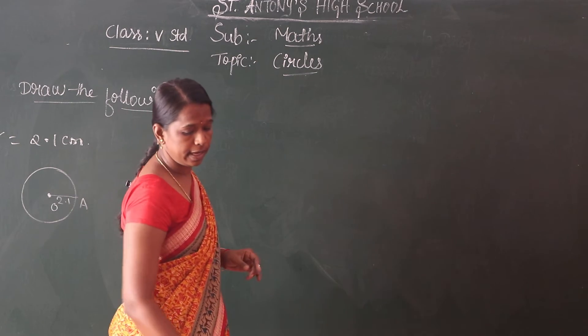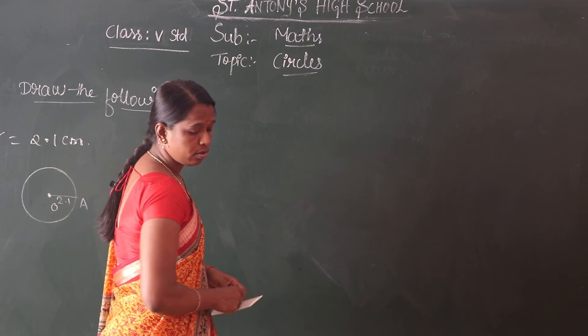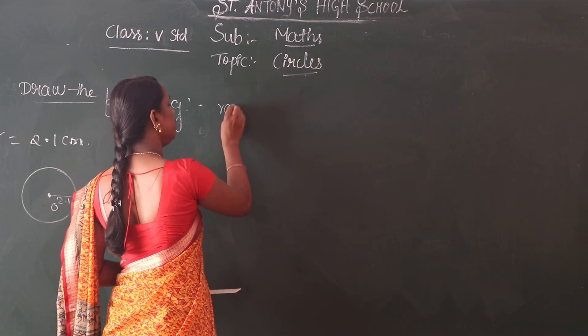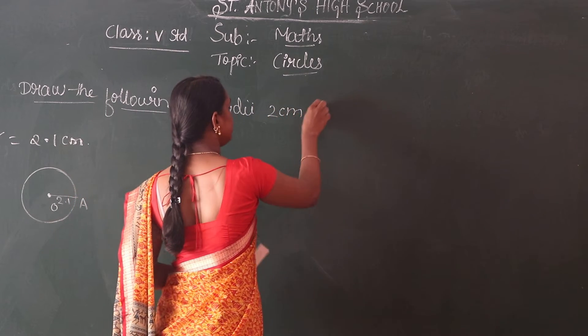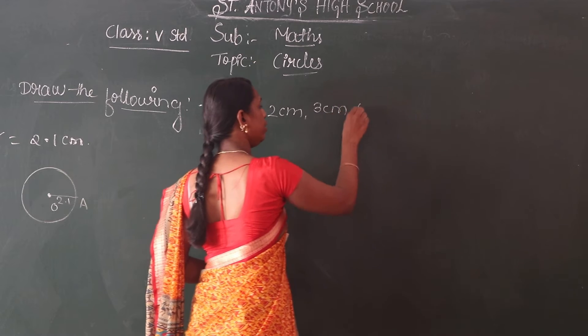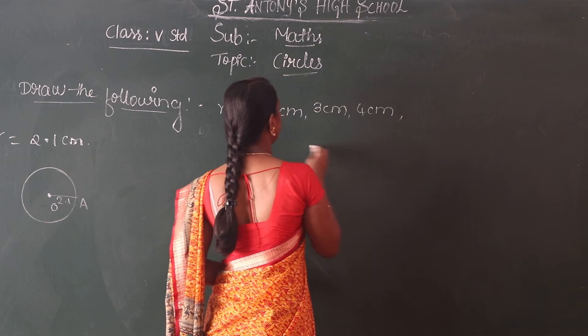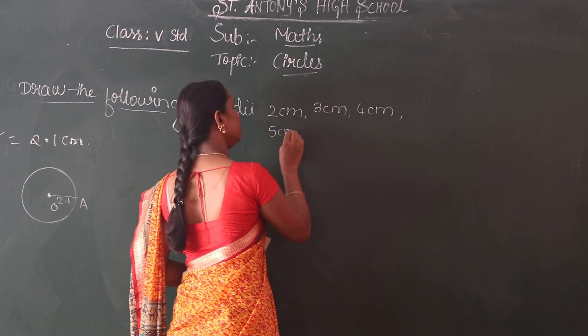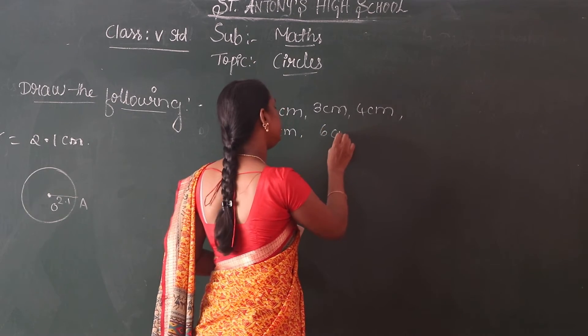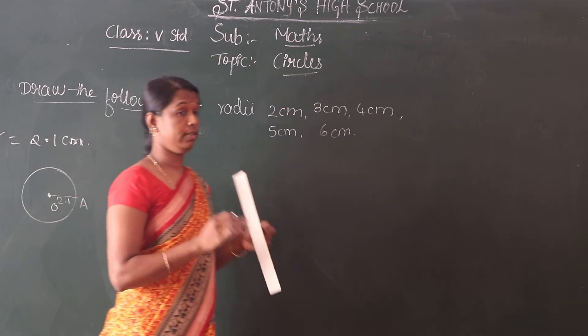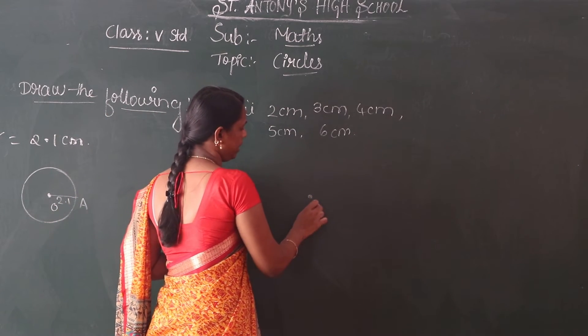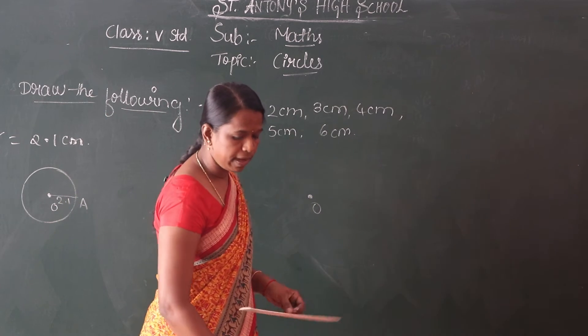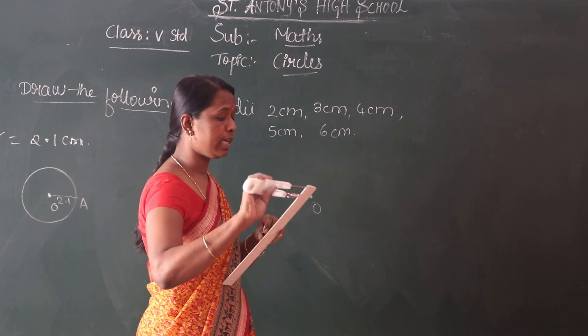Here are some radii starting from 2, 3 cm, 4 cm, 5 cm, and 6 cm. But the center of the circle is only one, only one center of the circle O. So first we have to measure 2 cm.